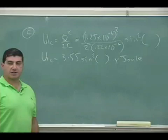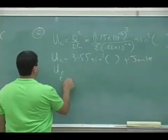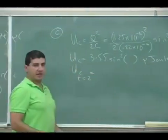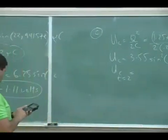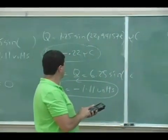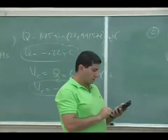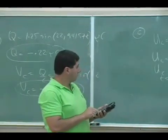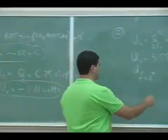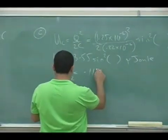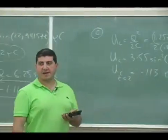And if I want to know the energy at t equals 2 seconds, then I could put 2 over there again, and then take sine of that. So sine of, what was the number? 22,941.57 times 2. So we're going to square it, multiply it by 3.55. 0.11. 0.113 micro joules.